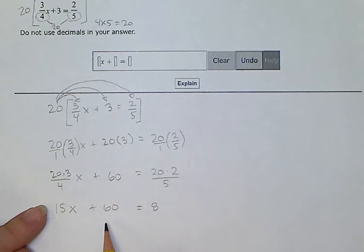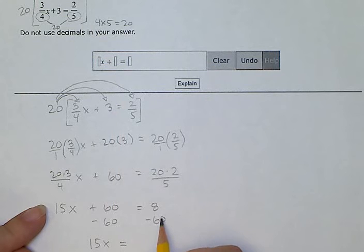Now I just need to solve for x. So I'm going to move this number and combine it with this whole number. And then I get 15x. This 60 minus 60 makes 0. So I'm not going to write that down again. And then 8 minus 60 is minus 52.